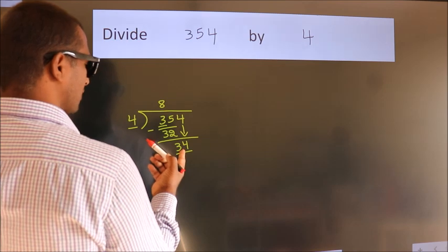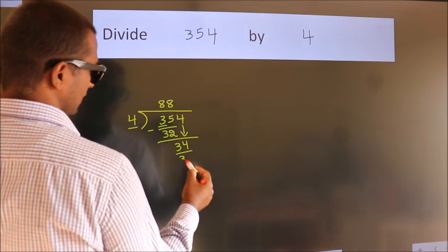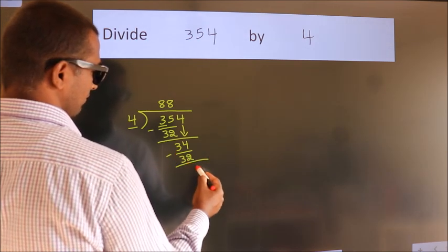A number close to 34 in 4 table is 4 times 8 equals 32. Now we subtract. We get 2.